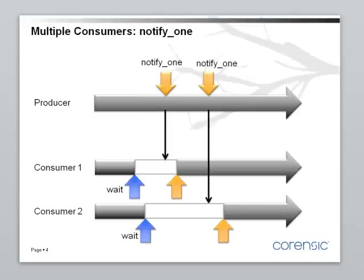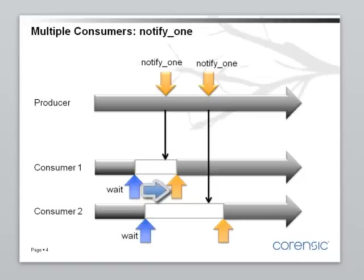There could be multiple consumers, and multiple producers as well. notify actually has two versions. One is called notify_one, and it wakes up one thread. Here we have two consumers, they are both waiting, and the producer calls notify_one. Consumer one wakes up and continues. The next time the producer calls notify_one, consumer two wakes up and continues.